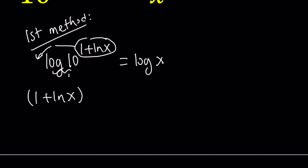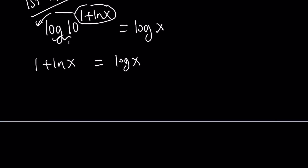So we can write it as 1 plus ln x equals log x. Now how do you solve this equation? There are a few different ways to go about it. First of all, I'm going to put the variables on the same side, so write it as log x minus ln x equals 1.